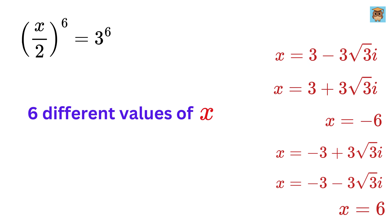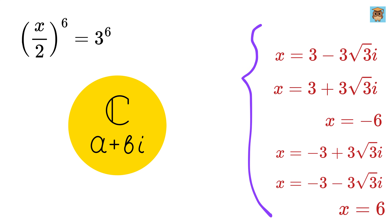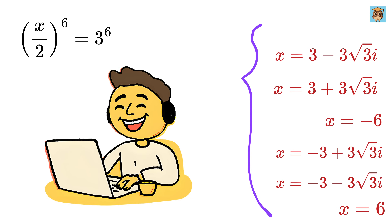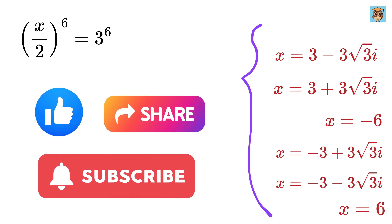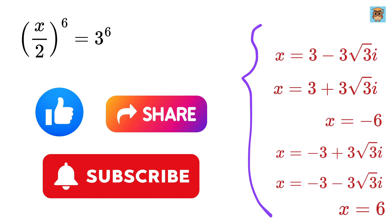Thus, the six solutions to the given equation are x equals 6, minus 3 minus 3√3·i, minus 3 plus 3√3·i, minus 6, 3 plus 3√3·i, and 3 minus 3√3·i. For those familiar with complex numbers, can you solve the same using the Roots of Unity method and provide your answer in the comments? If you enjoyed this video, please like, share, and subscribe to our channel.